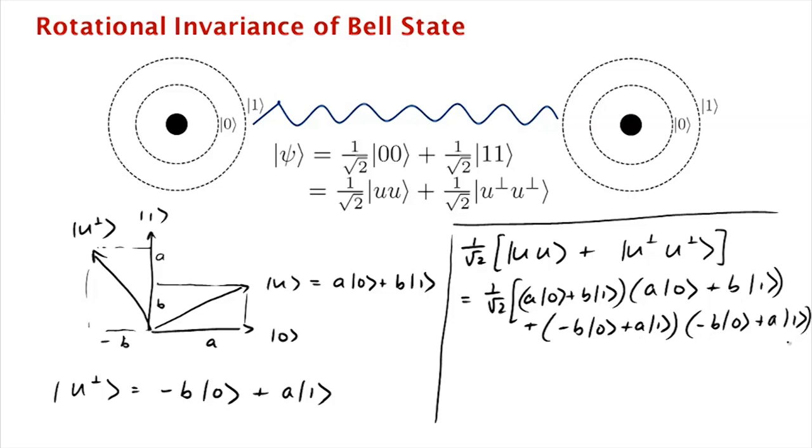And now what we want to do is collect terms. So what's the amplitude of 0, 0? Well, you get a squared, and then you get from here minus b times minus b, which is b squared. And similarly, for 1, 1, you get b squared, b times b from here, and a times a from here, so you get a squared plus b squared times 1, 1.